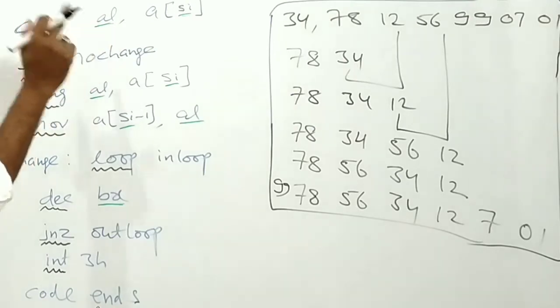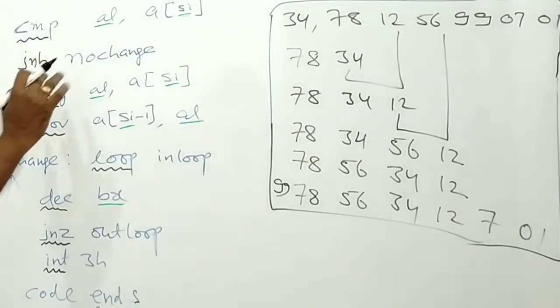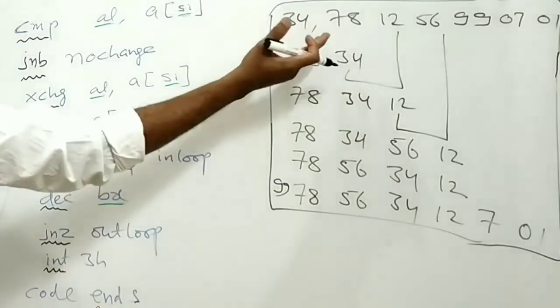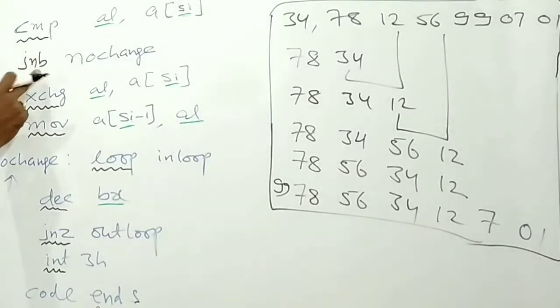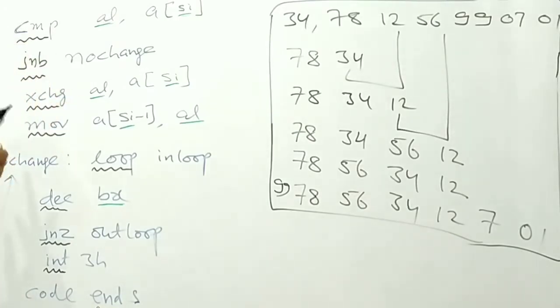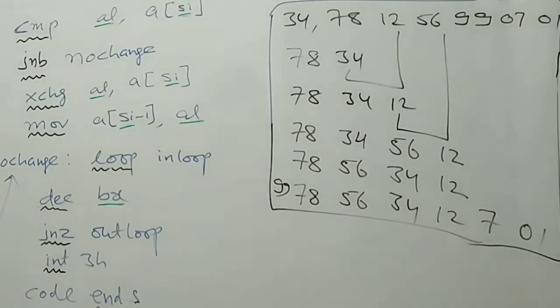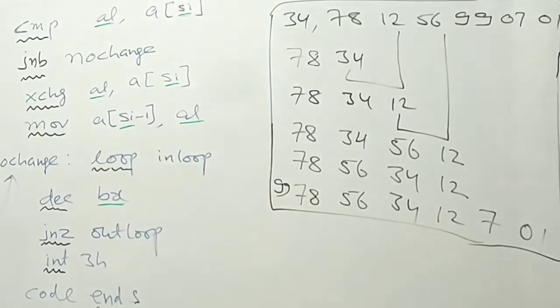If the numbers require any change, like if they are in ascending order I need to change. Otherwise I have to continue with no change. So I am checking that. JNB, jump if no borrow or jump if that particular bit is not set. I am checking, so if there is no change required, if the condition is satisfied it will go to no change. And then it will go to the loop, in loop and it will continue the process. It will take this number into AL and SI will be incremented and these two numbers will be in comparison. Like that this process completes.